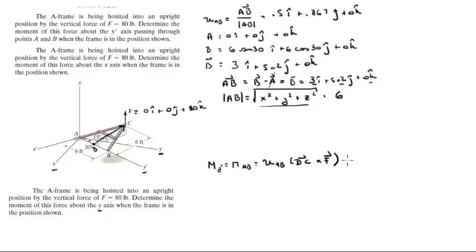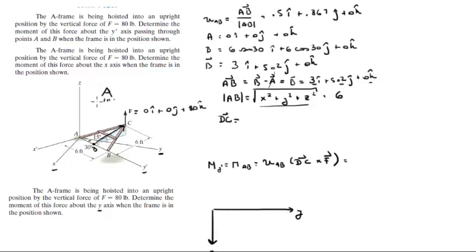To find DC, if you look at this whole assembly from the top it will look like this: you have the x-axis, the z-axis pointing towards us, then point A, point D, and point C, with a 90-degree angle between them.